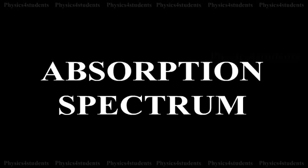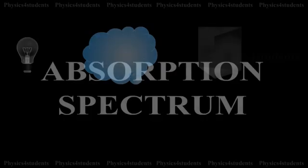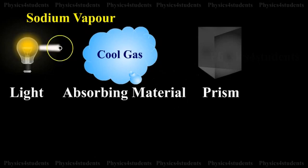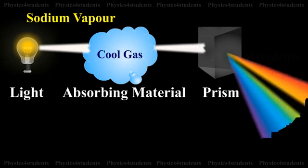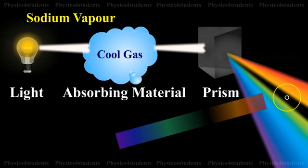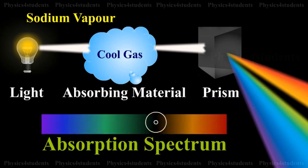Absorption Spectra. When light emitted from a source is made to pass through an absorbing material and then examined with a spectrometer, the obtained spectrum is called an Absorption Spectrum. It is characteristic of the absorbing substance.